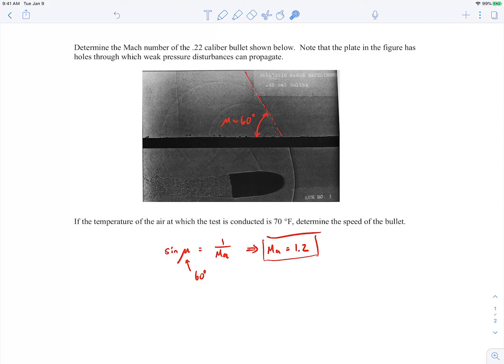Okay, the second part of this problem is we're told if the temperature of the air is 70 degrees Fahrenheit, determine the speed of the bullet. So this just goes back to the definition of the Mach number.